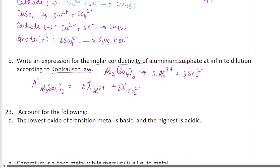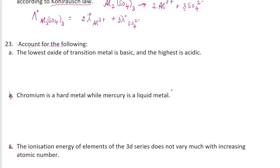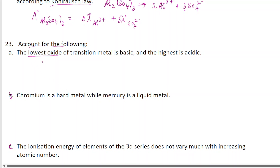So question number 22 is completely done. Now let's move to question number 23. Question number 23 says 'account for the following' and has 3 subdivisions — A, B, and C. Part A asks: the lowest oxide of a transition metal is basic and the highest is acidic — give the reason. For the lowest oxide, we take the lowest oxidation state, and for the highest oxide, we take the highest oxidation state.